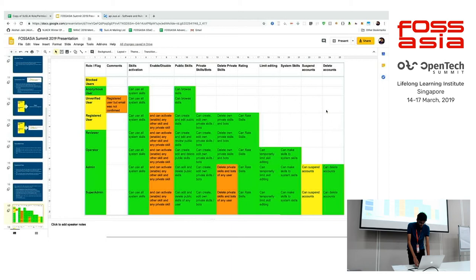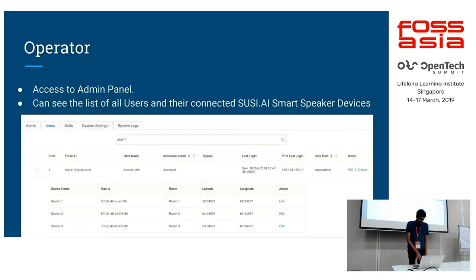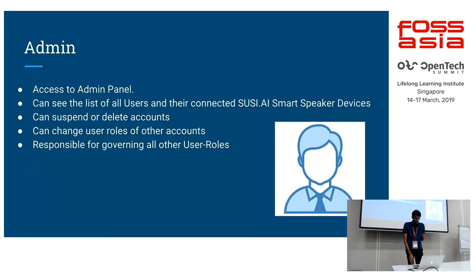The next user role is operator — this is where things get interesting. This user gets access to the full admin panel. They can see the list of all users and their connected SUSI AI smart speaker devices. And then we have admin, which gets even more powers than operators and obviously also has access to the admin panel.